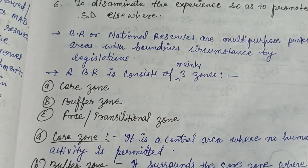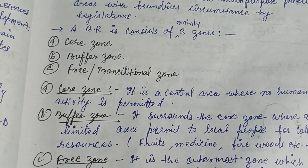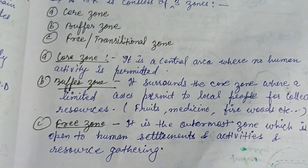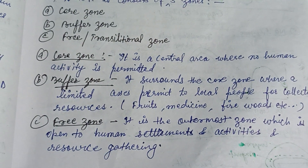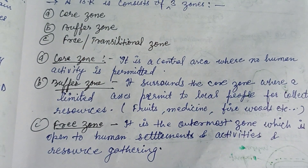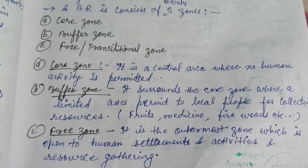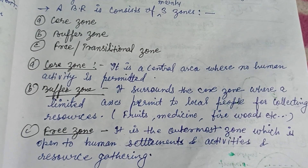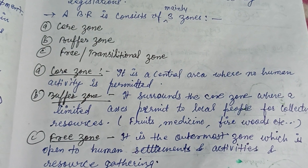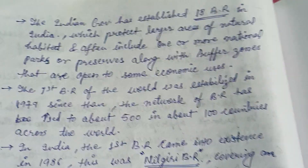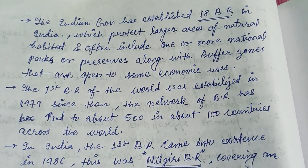There are three zones in the Biosphere Reserve: the core zone, the buffer zone, and the transitional zone. The outermost transitional zone is open to human settlement, activities, and resource gathering. The buffer zone surrounds the core zone, where limited access permits local people to collect resources. The core zone is the central area where no human activity is permitted.